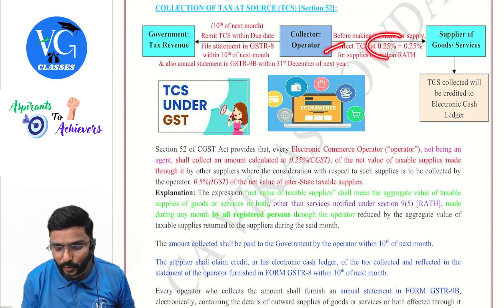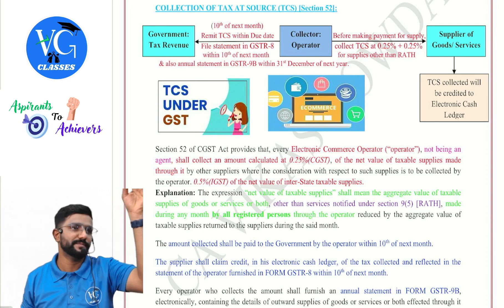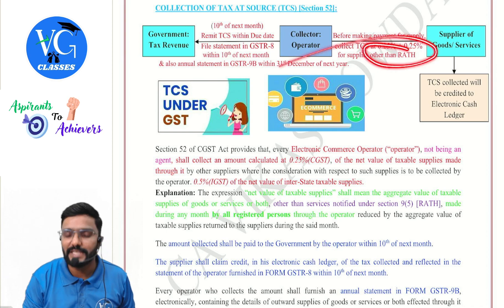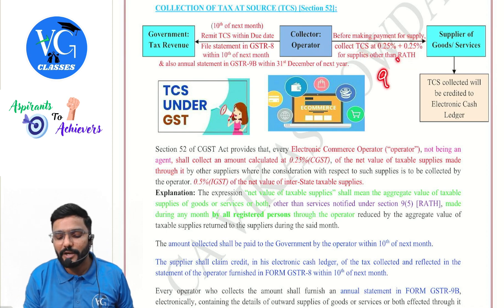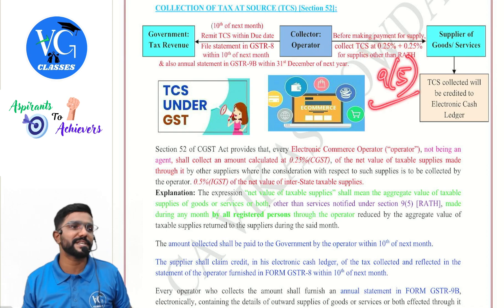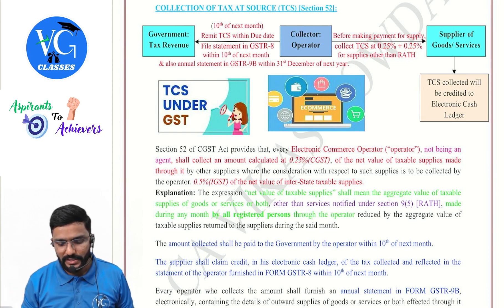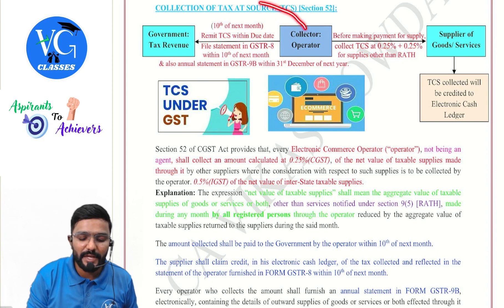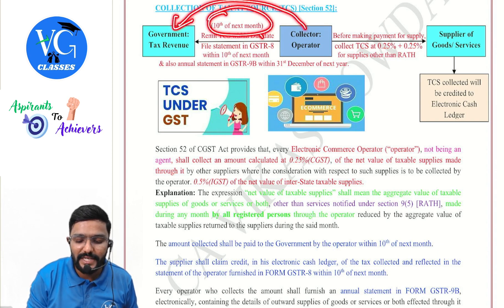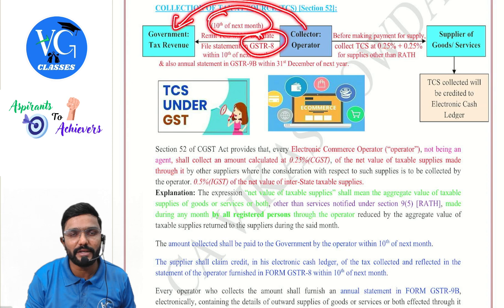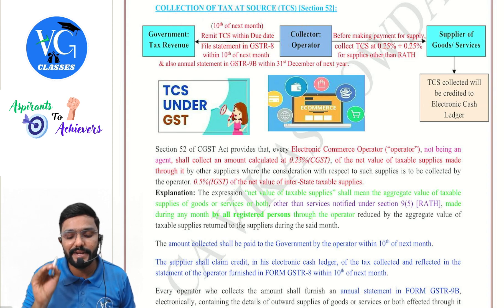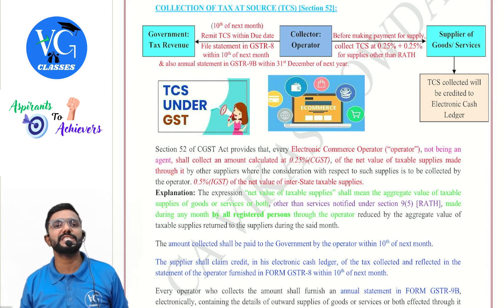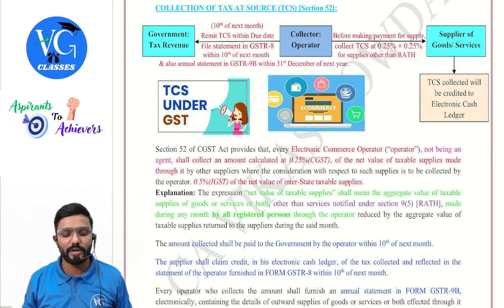Collect TCS at 0.25% CGST and 0.25% SGST — that is the amended rate — for supplies other than RCM. Whatever TCS is collected by the e-commerce operator, he must deposit it to the government within the 10th of next month and file a statement — not a return, but a statement — in Form GSTR-8 within the 10th of next month.